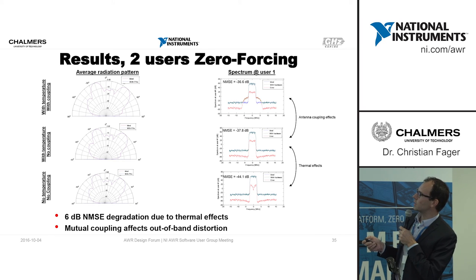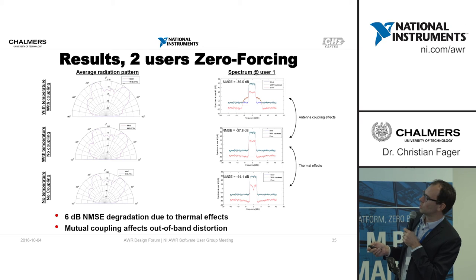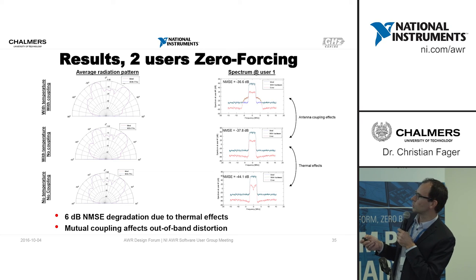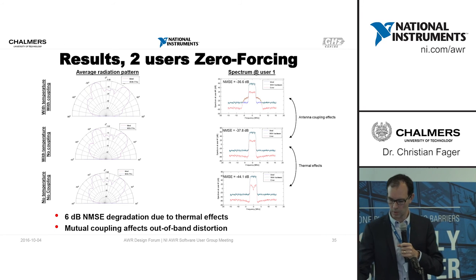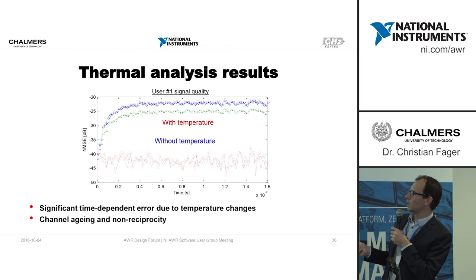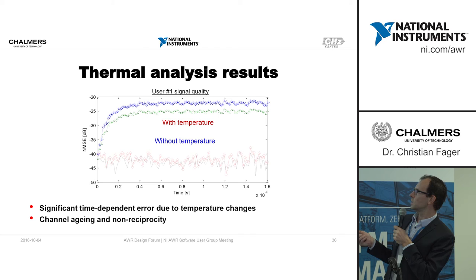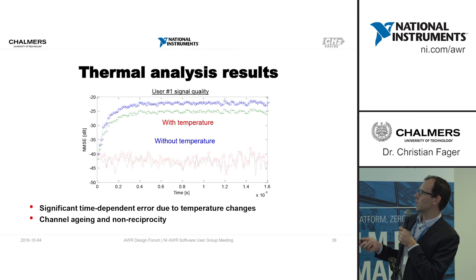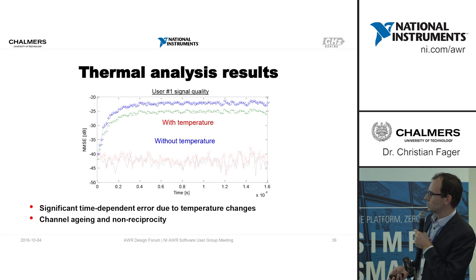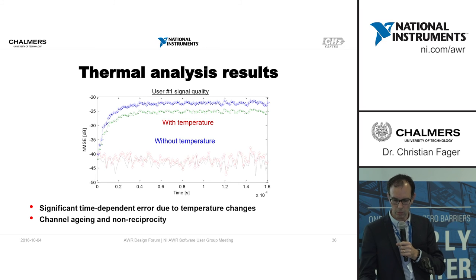Combining mutual coupling with thermal effects, for example in a zero-forcing case: comparing no coupling and no thermal effects, no antenna coupling with thermal effects, and antenna coupling with thermal effects — the radiation patterns don't change very much, but the spectrum and NMSE change significantly, and one can distinguish the contribution from each effect. As another view: the in-band signal error at user one changes versus time, and as temperature rises there is increasing distortion. This means the channel estimate would age and require re-iteration, causing non-reciprocity problems and so forth. These are preliminary results and we are working on experimental validation.